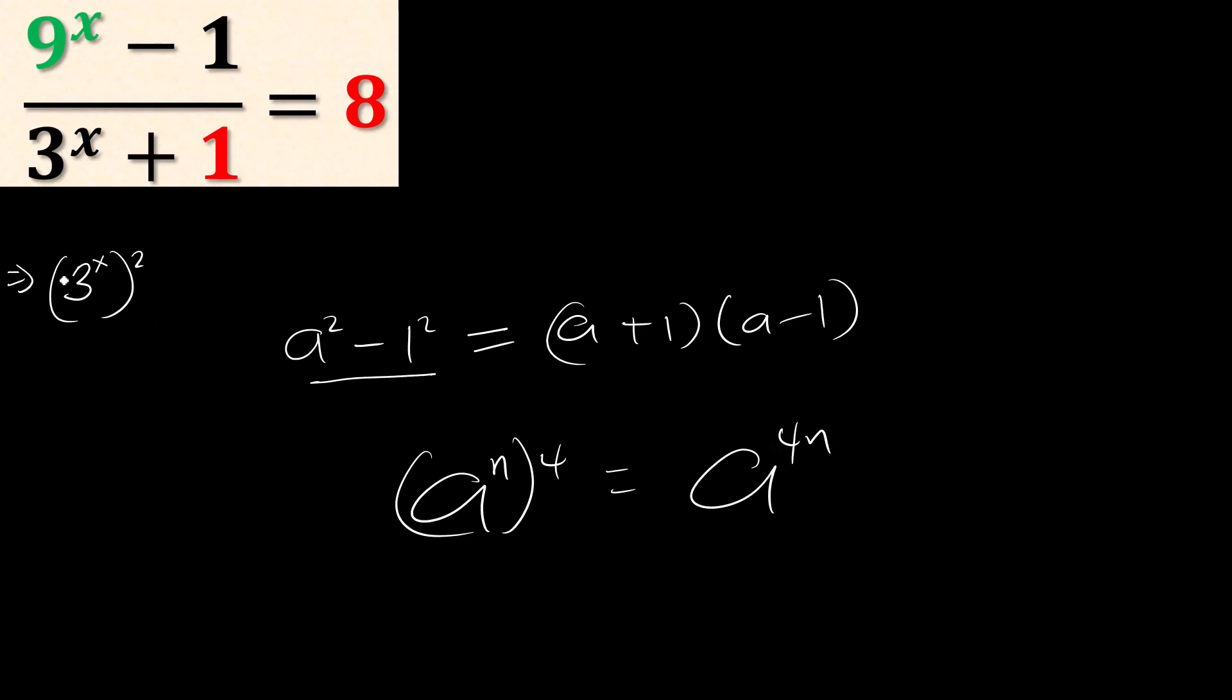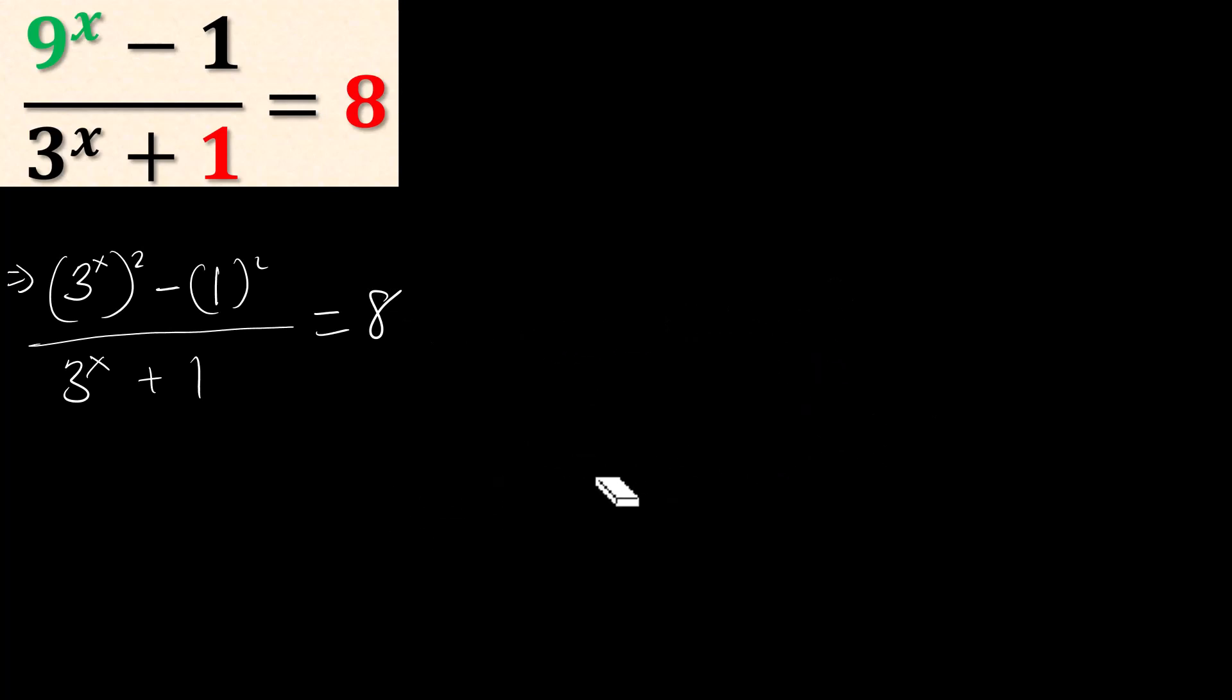So minus 1. We can write this one as (3^(2x) - 1²), which equals (3^x + 1)(3^x - 1).